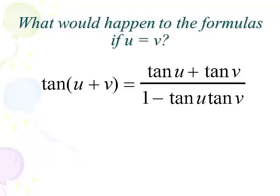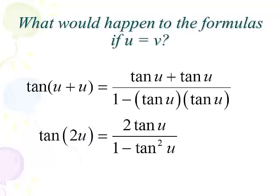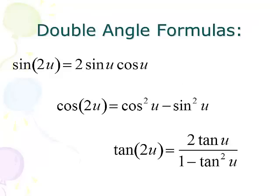Let's move on to tangent. We're going to let u and v be the same angle, and we get tangent u plus tangent u over 1 minus tangent u times tangent u. That simplifies to 2 tangent u over 1 minus tangent squared u — our third and final double angle formula. Those are the three double angle formulas for sine, cosine, and tangent, and we will give those to you on the front of every exam on the formula sheet.